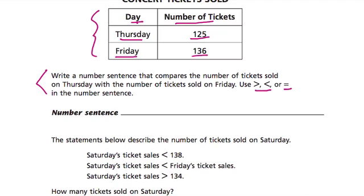So a number sentence is some type of equation that relates two or more quantities, right? So here are two quantities: 125 and 136. And I think we all know intuitively that 136 is more than 125. And the way we show that is with this symbol.